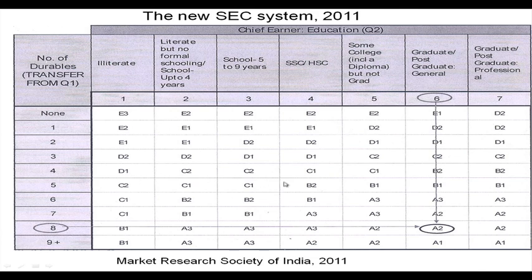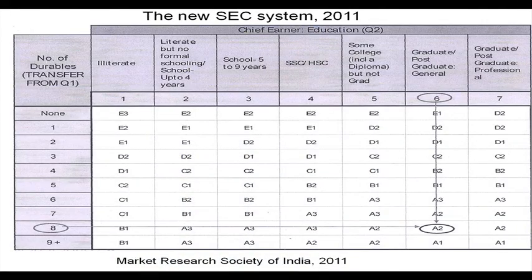For example, if a person had 4 durables and was higher secondary pass, they would be C1 type SEC. Based on these SEC categories, we can classify villages or different portions of a town or city, and understand what products and brands could be sold to those people.